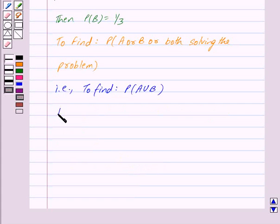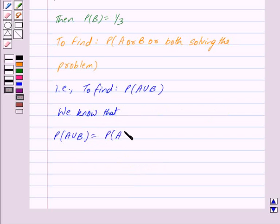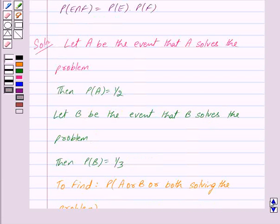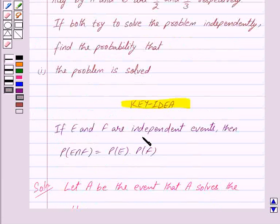Now we know that Probability of A union B is equal to Probability of A plus Probability of B minus Probability of A intersection B. We mark this as equation 1. Now A and B are independent events because in the question we are given that both try to solve the problem independently. And by the key idea, for two independent events E and F, Probability of E intersection F is equal to Probability of E into Probability of F.